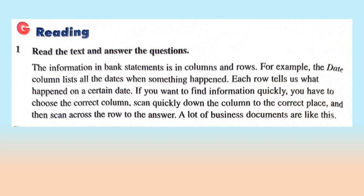Now we are going to have a reading passage. The information in a bank statement is in columns and rows. For example, the date column lists all the dates when something happened. Each row tells you what happened on a certain date. If you want to find information quickly, choose the correct column, scan down to the correct place, then scan across the row to the answer. Many business documents are structured this way.